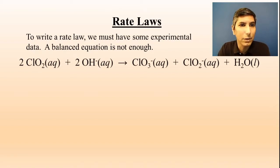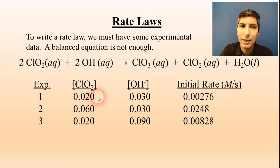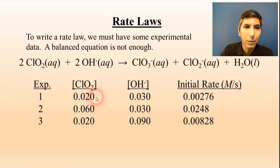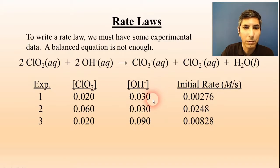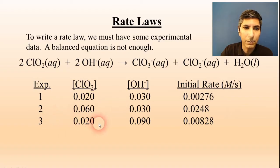Here's an example of a balanced equation, and here we have some data. We have three different experiments, and in each one we have an initial concentration of each reactant. For example, in experiment one, the initial concentration of ClO₂ is 0.020 mol/L, hydroxide ion is 0.030 mol/L, and the initial rate of the reaction is 0.00276 M/s. Then we have two other experiments as well.